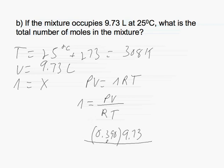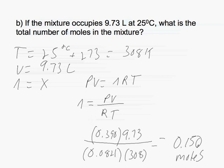We know our ideal gas constant, which is 0.0821. And we know that our temperature is 308, which gives us a total of 0.150 moles. All right.